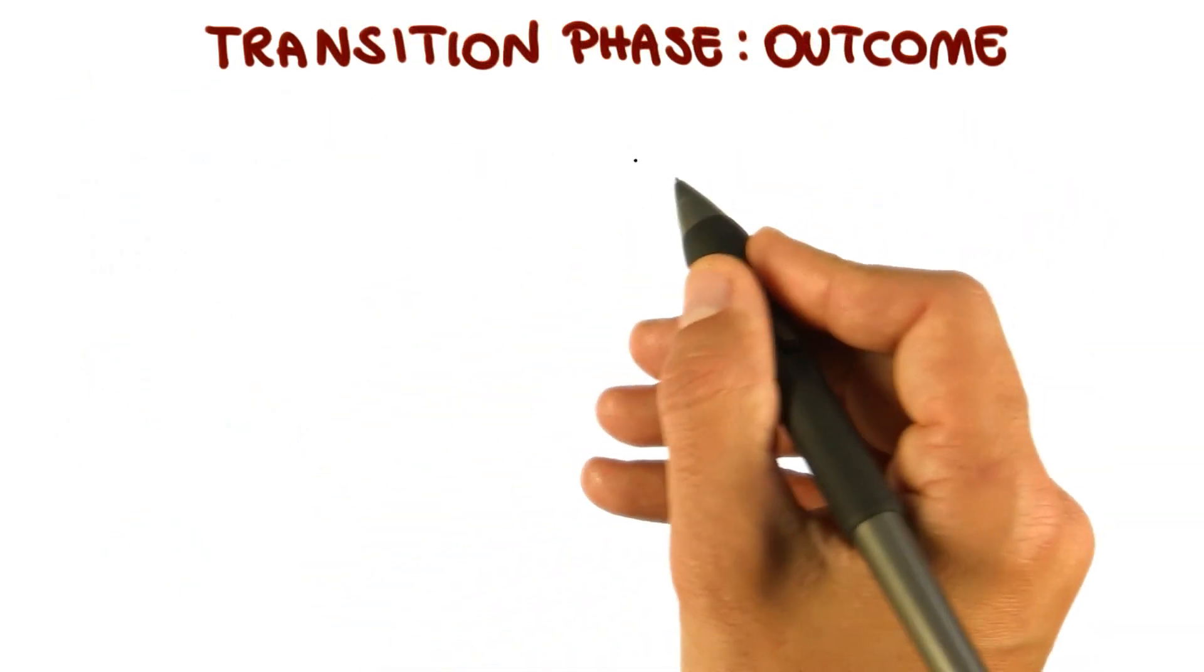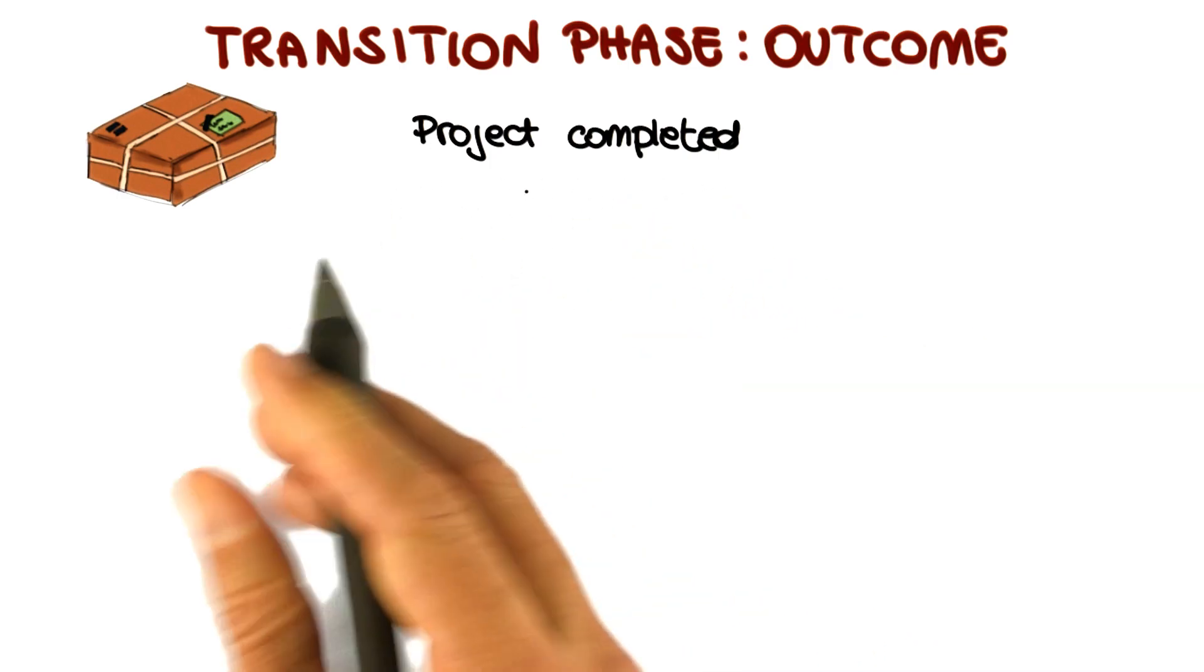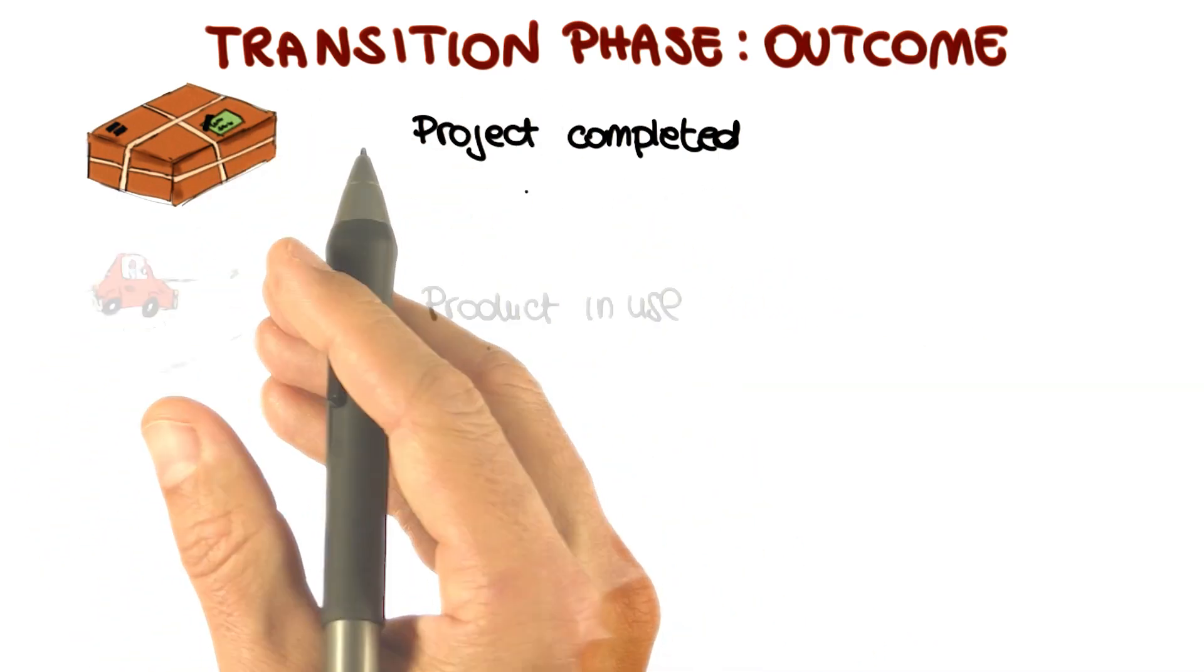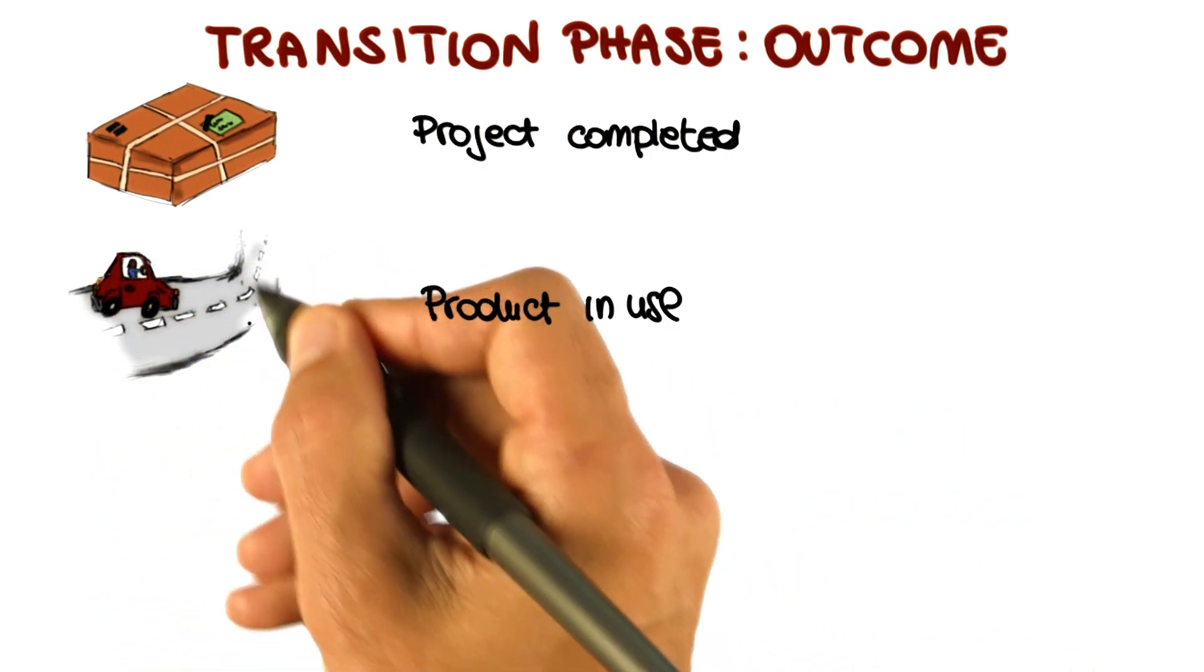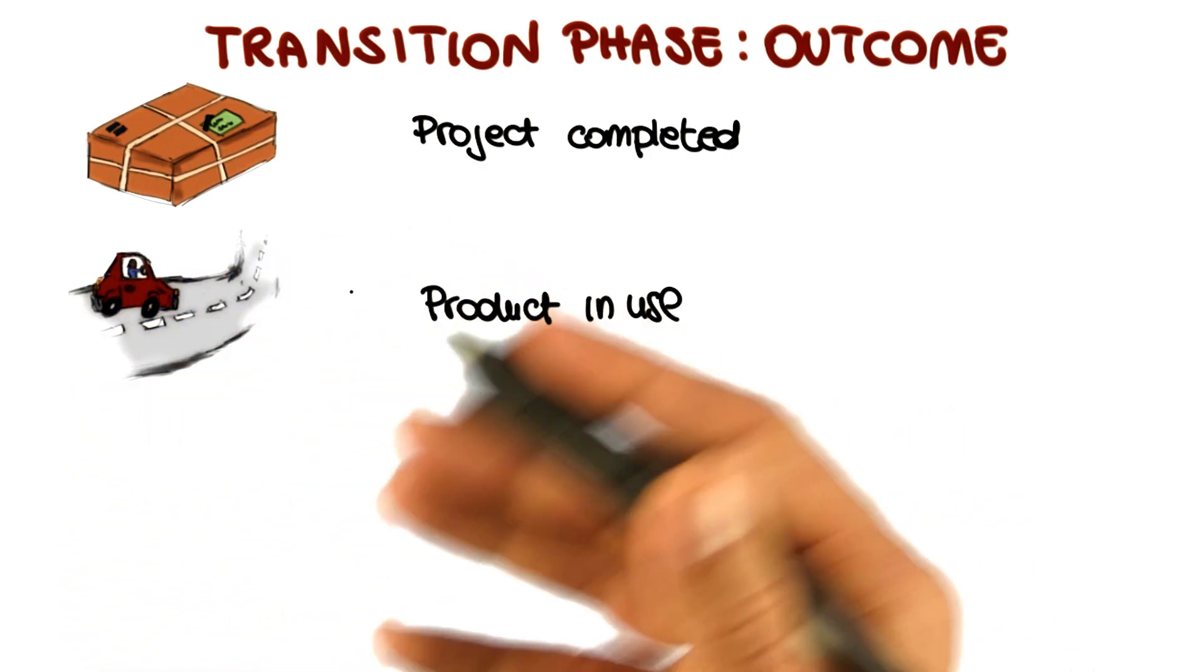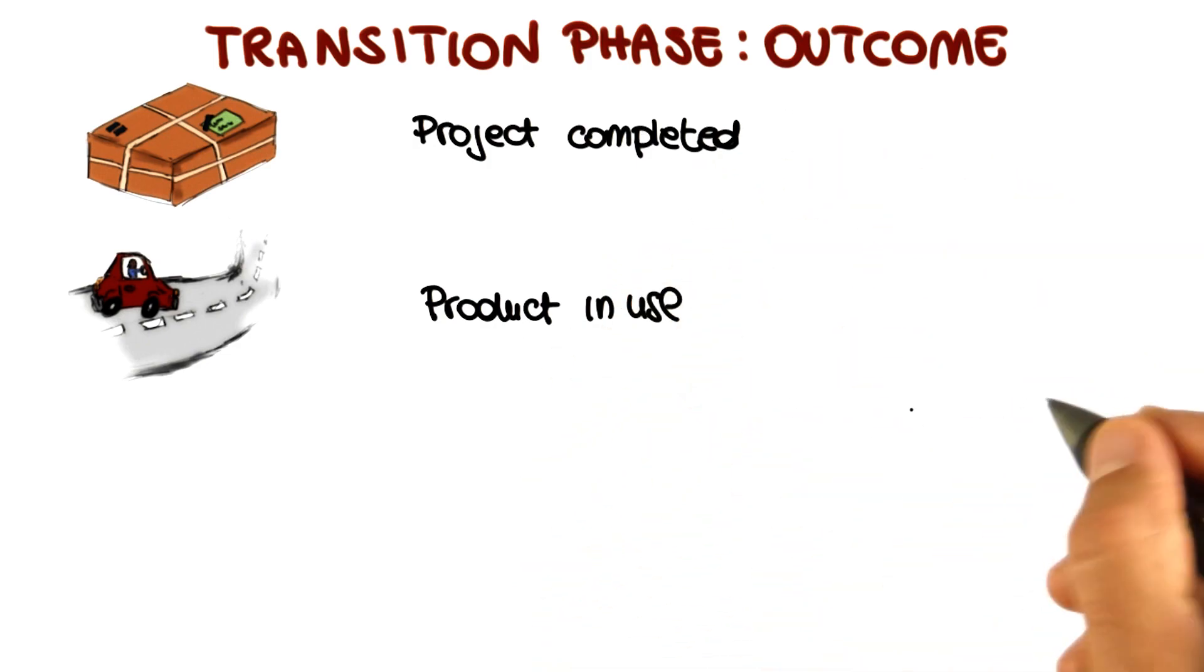So now let's see what kind of outcome these activities will produce. The first one is a complete project with all the artifacts that we mentioned before. Another outcome is that the product will be actually in use. So the product will be in the hands of the users and the users will start using it, will start interacting with it for real, not just in a beta testing setting.